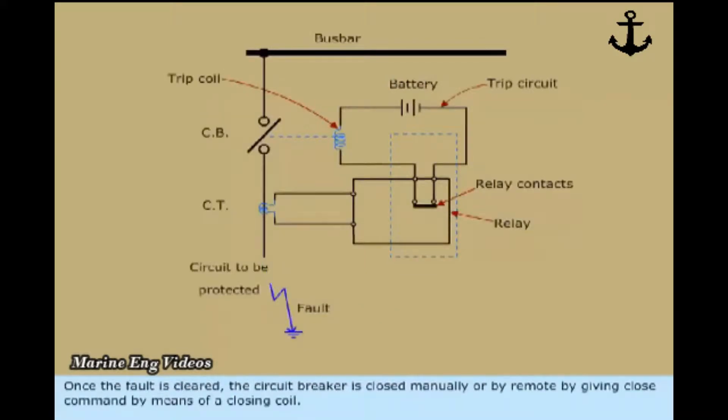Once the fault is cleared, the circuit breaker is closed manually or by remote by giving close command by means of a closing coil.